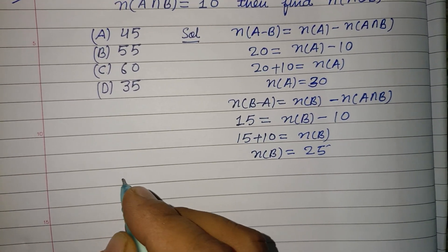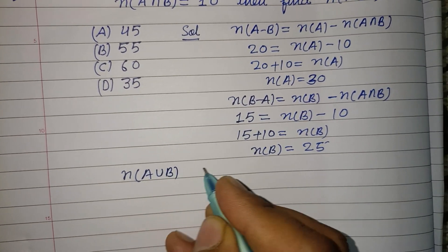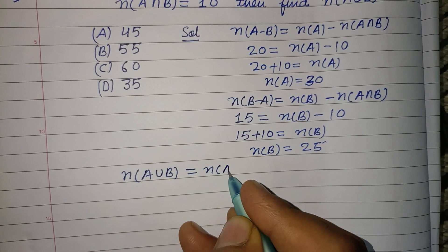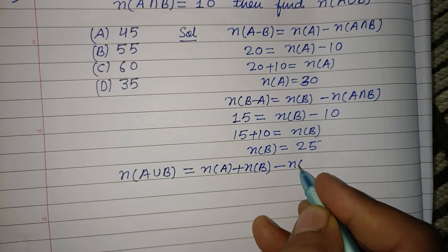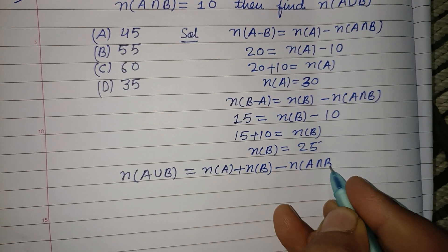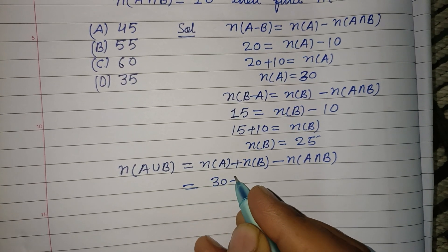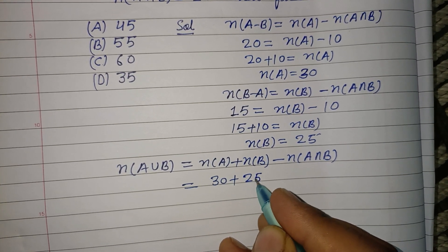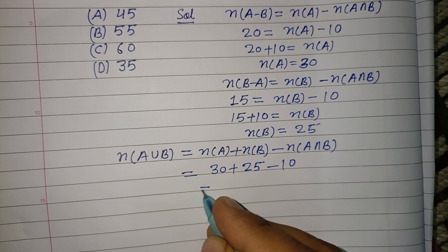Now we have n(A∪B) equals n(A) plus n(B) minus n(A∩B). Putting in the values: n(A) is 30, n(B) is 25, and n(A∩B) is 10.